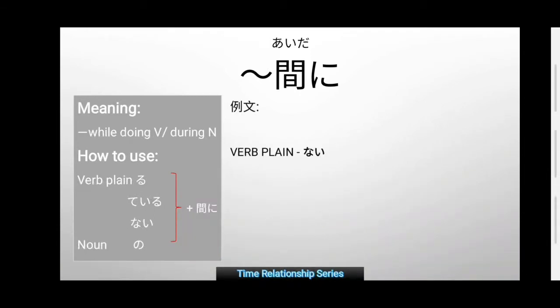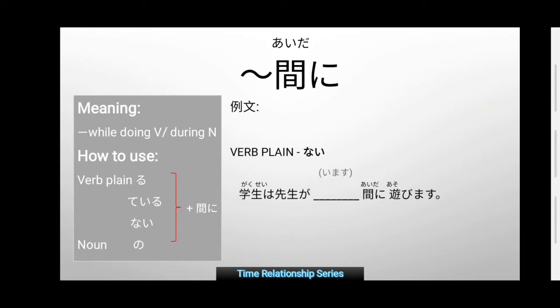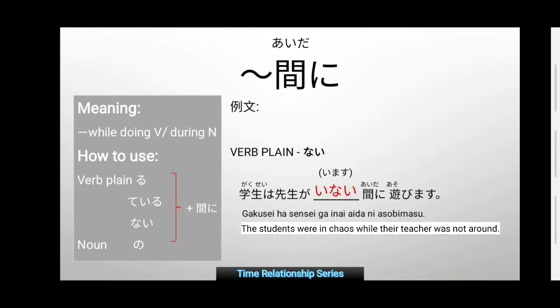Next, we have verb plain nai (negative). Gakusei wa, sensei ga [blank] aida ni, asobiimasu. Gakusei is a student, sensei is a teacher, asobiimasu means to play or to be rowdy. The verb here is imas — to make it negative, it becomes inai. So: Gakusei wa, sensei ga inai aida ni, asobiimasu. In English: The students were in chaos while their teacher was not around.